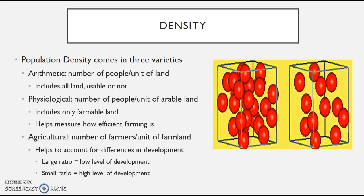Our last type is agricultural density: the number of farmers per unit of farmland. This one helps us account for differences in development. If there's a large ratio — lots of people farming — it indicates a low level of economic development, because most people are farming to try and support themselves. If on the other hand it's a very small ratio, that's a high level of development, meaning most people are off doing other things because farming is very efficient and supports lots of people.